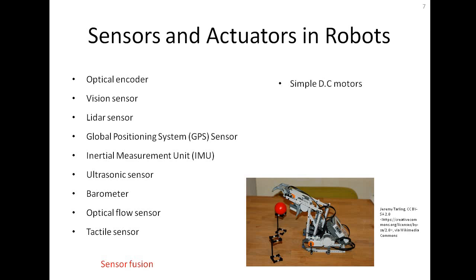Now let's talk about actuators commonly used in robots. Simple DC motors have brushes and are used in mobile robots, but they are not that robust — the brushes become damaged over time. Brushless DC motors are very robust because they have no brushes and are most commonly used in flying robots like quadcopters. Servo motors are typically used in joints for position feedback and control. Stepper motors are also used for position and velocity control.